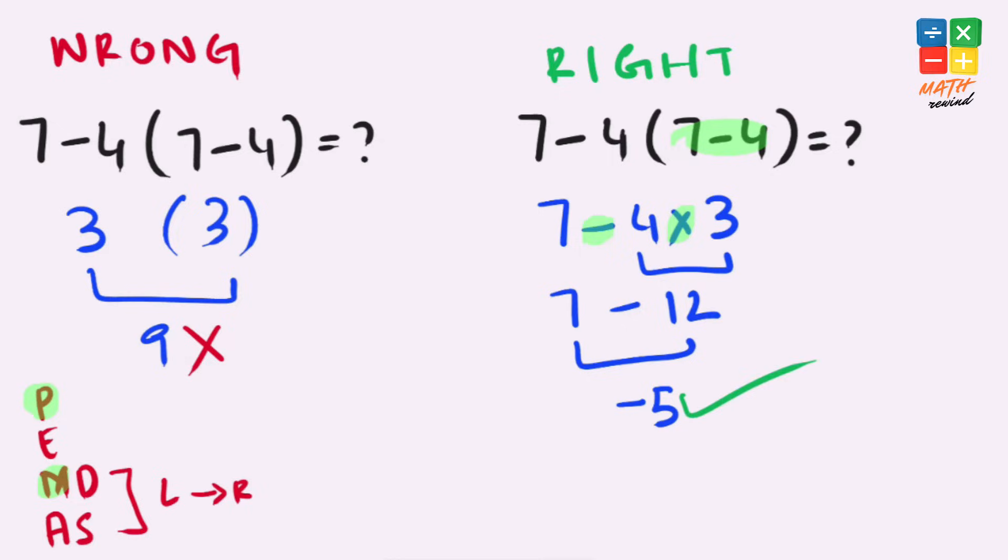Remember, always follow the rules: parenthesis, exponents, then multiplication and division, and finally addition and subtraction. If you have both multiplication and division in the same equation, you must work from left to right, and same applies to addition and subtraction.